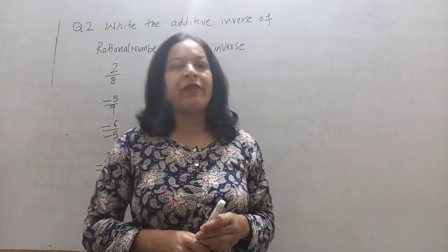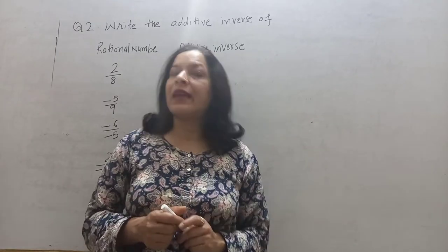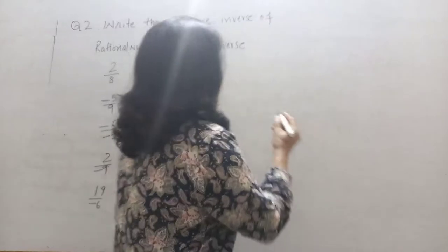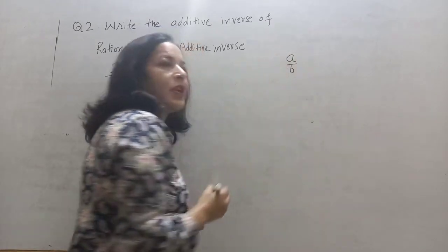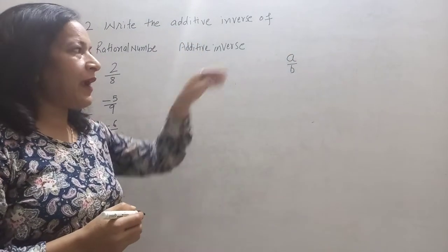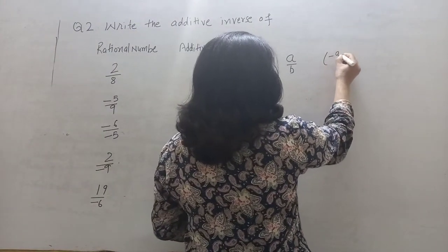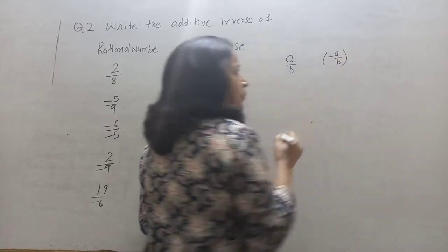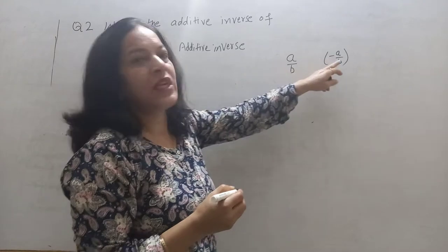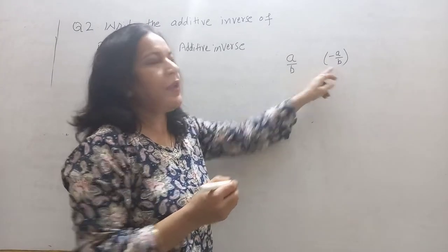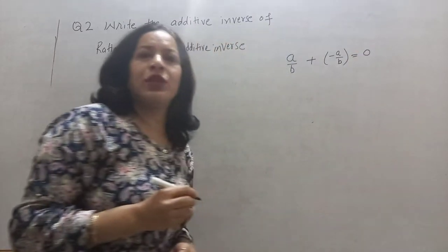You know very well what additive inverse means. Inverse means exactly opposite. If a upon b is a rational number, then in addition, what will be exactly opposite? Minus a upon b. The additive inverse of any rational number is a number by adding which we get 0.